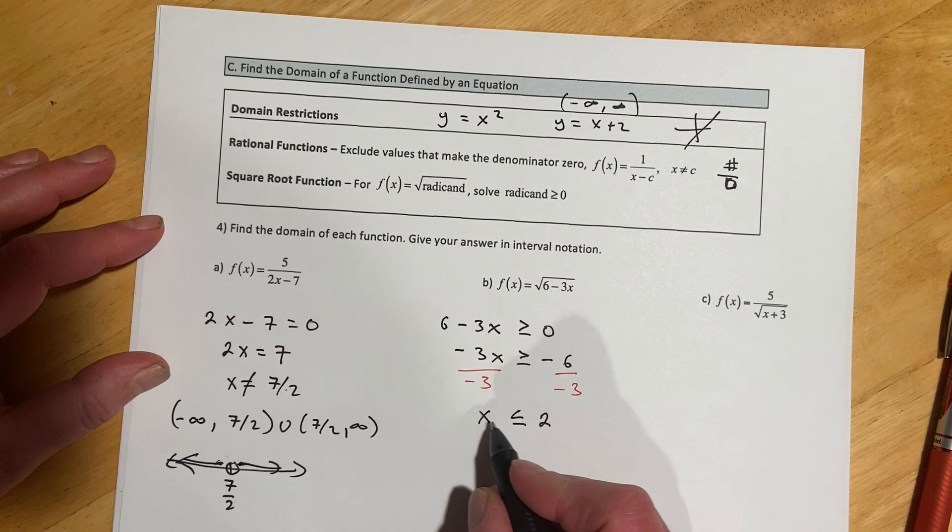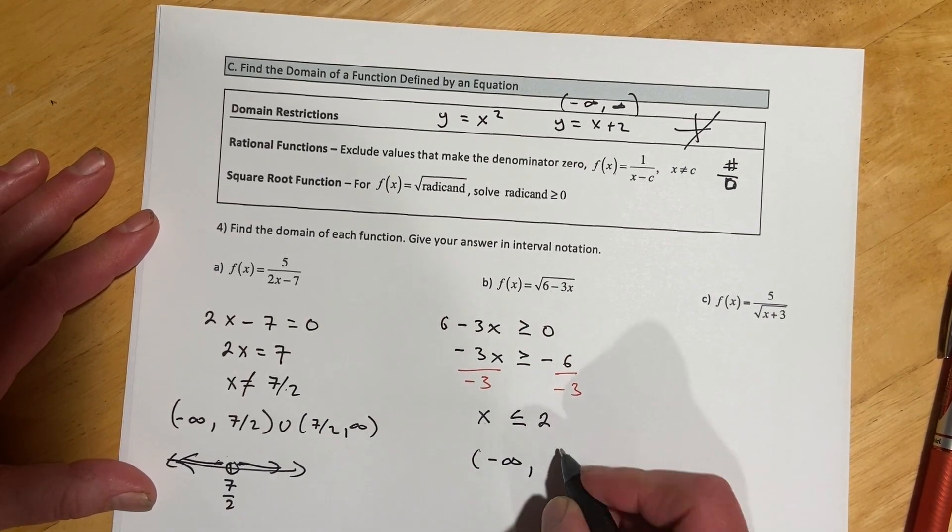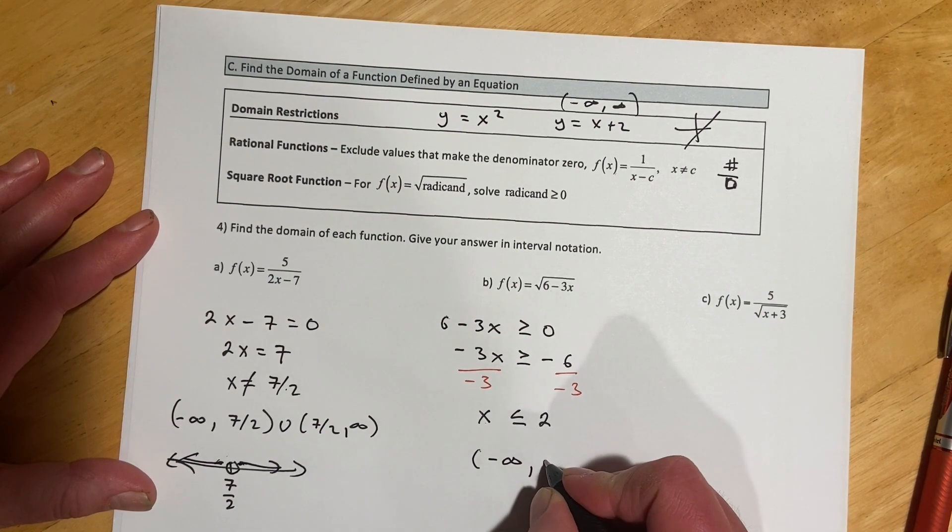In interval notation, so this is the x's are less than or equal to 2. So that's going to go negative infinity, and then up to 2.